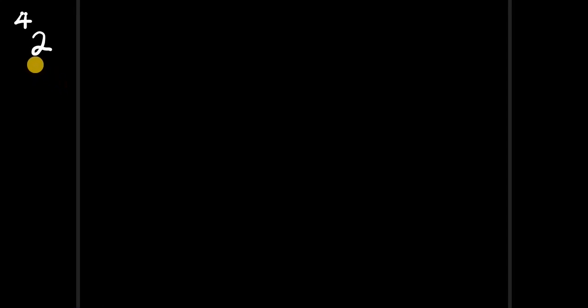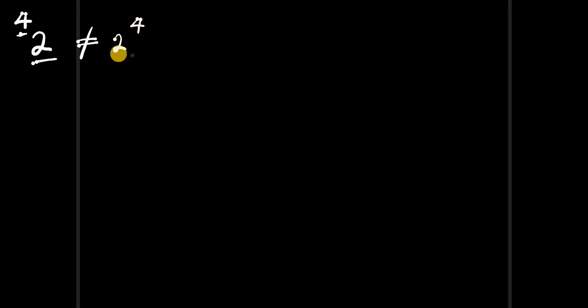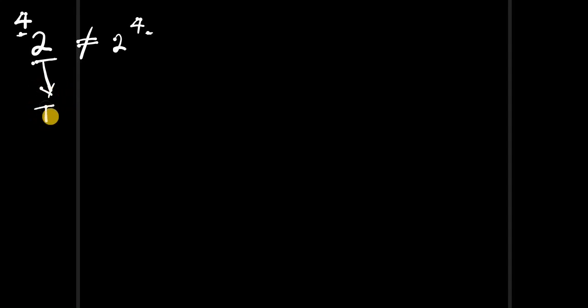In this video we have a problem where the exponent is on the left and the base is 2, which is quite different. This is not equal to writing 2 to the power of 4, where the exponent is on the right, which is what we are used to. The exponent on the left — this operation is called tetration.